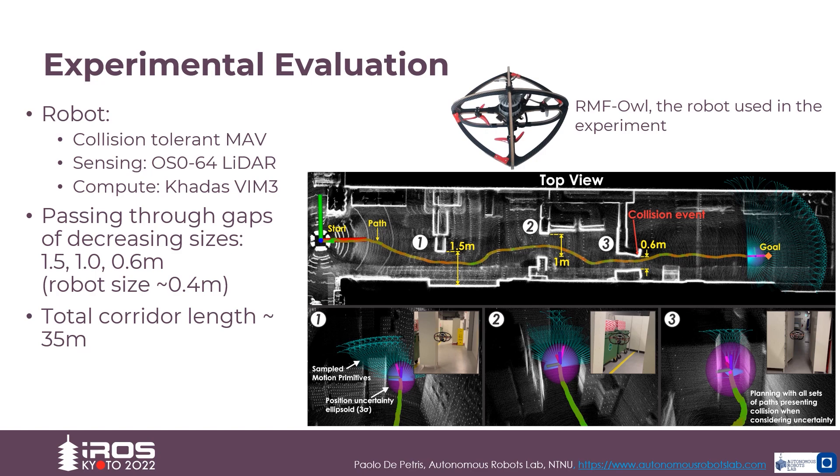In this experiment, the robot is commanded to reach a set point at the end of an obstacle field corridor, in which three increasingly narrower passages have been placed.